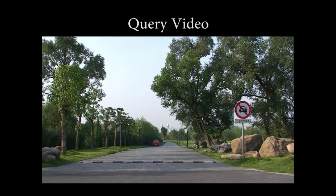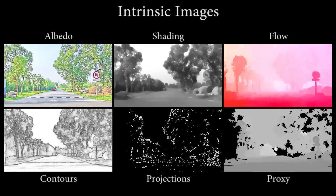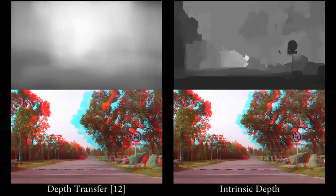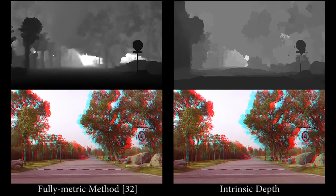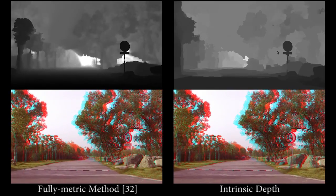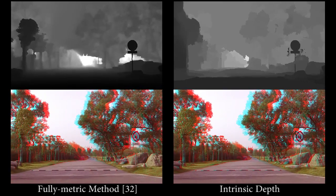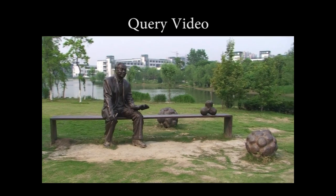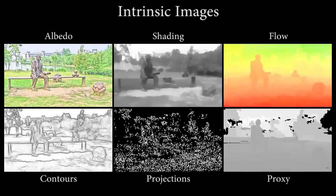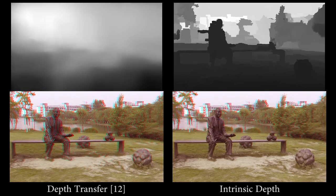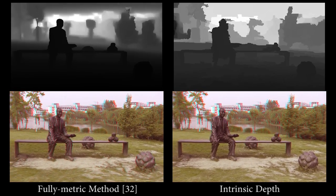This example captures an outdoor scene. The camera is translating, creating parallax, and the scene is extremely deep. As expected, depth transfer only captures a crude overall shape. Our method estimates the scene structure well, including sharp boundaries between objects. Our results are comparable to the fully metric method, which, unlike our method, is tuned for outdoor scenes. In this sequence, our method again performs well. Notice that our method captures the thin structure of the bench and the fact that the sky is distant.